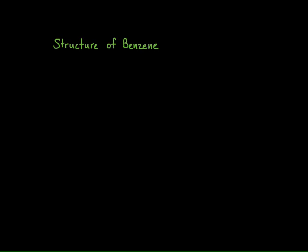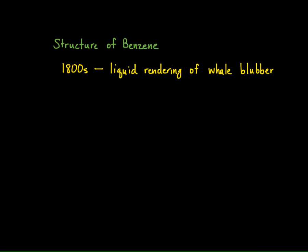Let's start off in chapter 14 thinking about the structure of benzene. In the 1800s, benzene was discovered as the liquid rendering of whale blubber — basically, you heat whale blubber up and you end up with this liquid. There's a high concentration of this substance that was determined to have the formula C6H6, a very unsaturated hydrocarbon containing the same number of hydrogens as carbons.